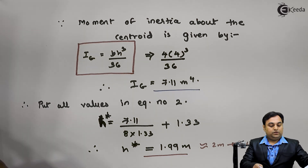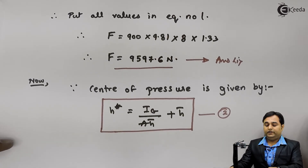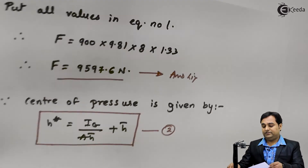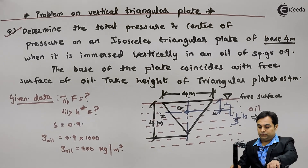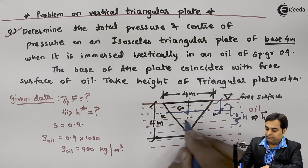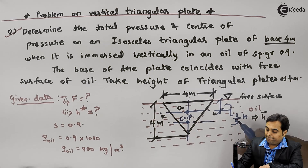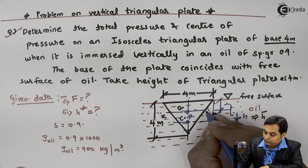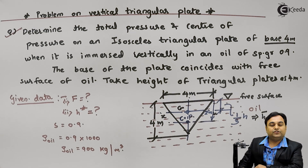To summarize: the total pressure, which is the hydrostatic force, is 9597.6 Newtons, and the center of pressure is located 2 meters from the free surface. On the diagram, the centroid is at one-third of H, which is 1.33 meters from the free surface. Below that is the center of pressure, denoted CP, at 2 meters from the free surface. At this center of pressure, the hydrostatic force acts.